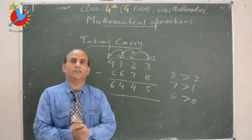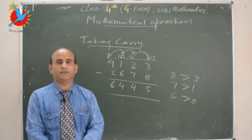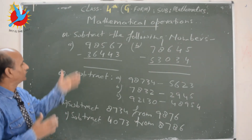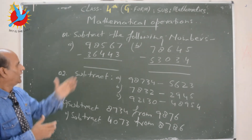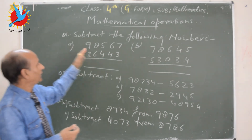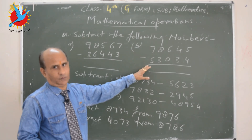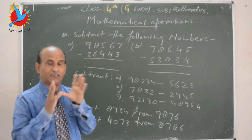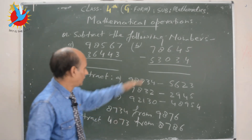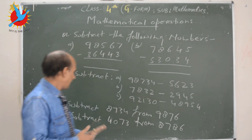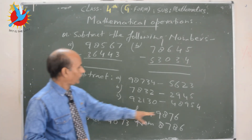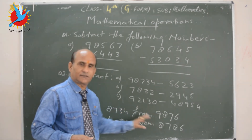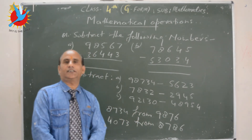I am giving you some questions to solve. The first one is simple — numbers are given in row format. The second one: first check whether the digits are equal, then write the number and solve. The third one is in statement form: subtract this from this. I know you know how to write the number in the correct format. Kids, thank you very much.